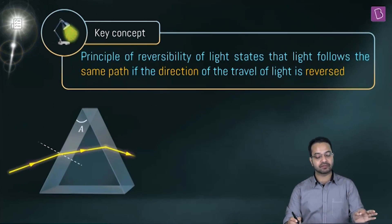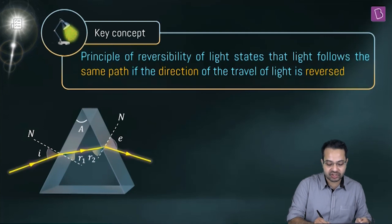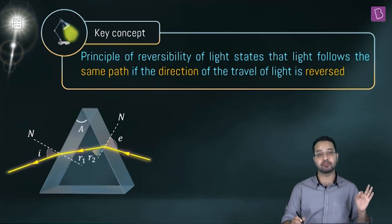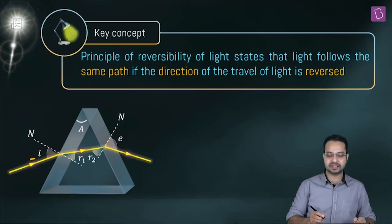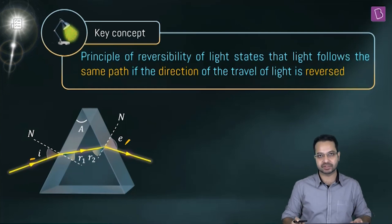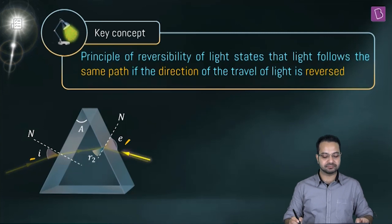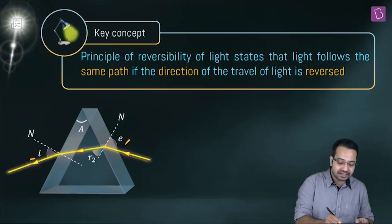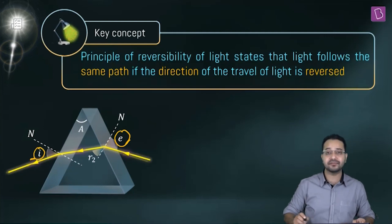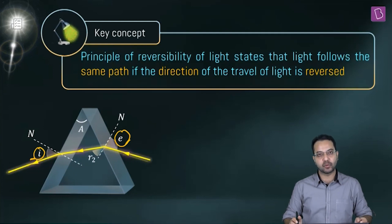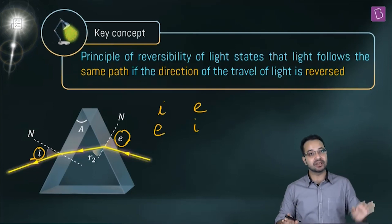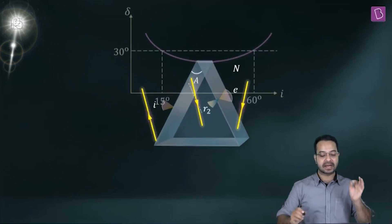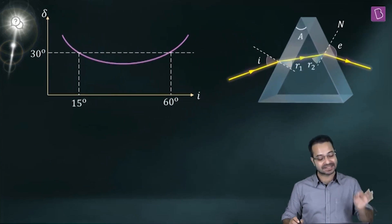When light travels from left to right, this is the angle of incidence and this is the angle of emergence. When we reverse the direction, the angle of incidence and angle of emergence swap. This means for every angle of deviation, there will be two values of angle of incidence, as seen in the plot. When 15° is the angle of incidence, 60° is the angle of emergence; when 60° is the angle of incidence, 15° is the angle of emergence.